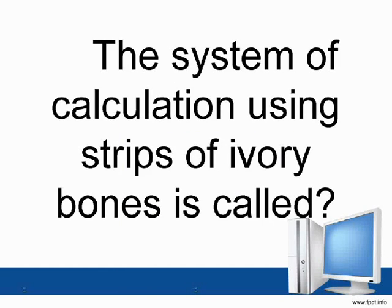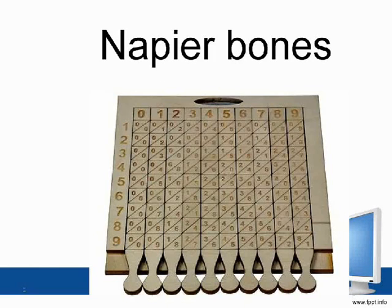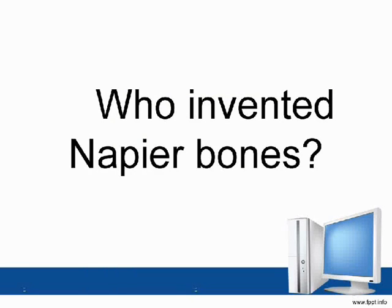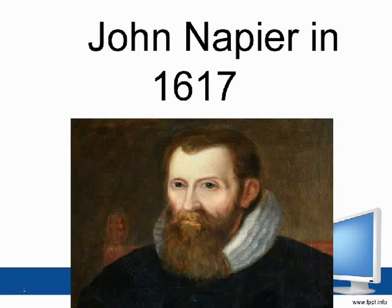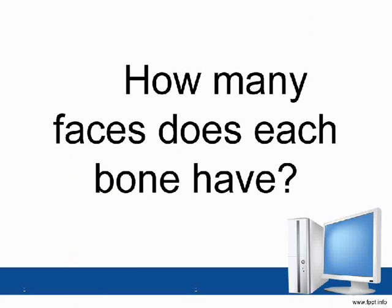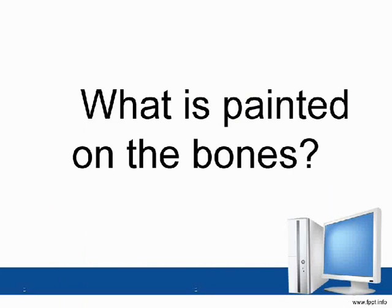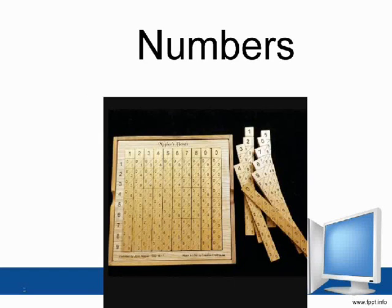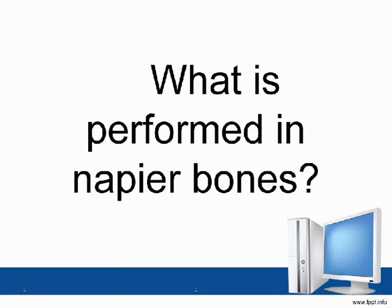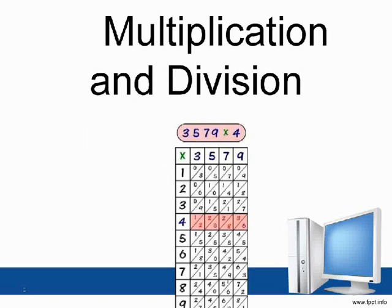The system of calculation using strips of ivory bones is called Napier Bones. Who invented Napier Bones? John Napier in 1617. How many faces does each bone have? Four. What is painted on the bones? Numbers. Multiplication and division are performed using Napier Bones.